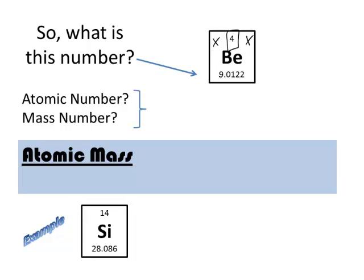But this number is not a whole number. So what is that? Atomic number and mass number are both whole numbers, and they are whole numbers because they are counts of particles. And we never have partial particles, so they're always whole numbers.